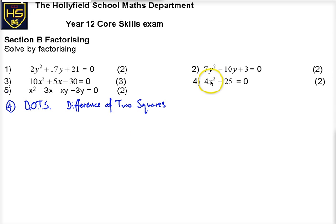Difference of two squares. So we notice that this is an x squared and 4 is a square number and this is a 25 and the word difference means that there's a subtract here and it only works with a subtract. In this case you should spot, and you should be really quick at spotting these, that you can just add 2x plus 5, 2x minus 5. And it always follows this pattern.